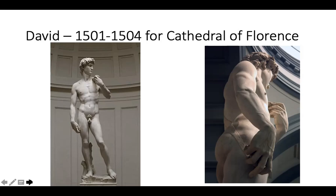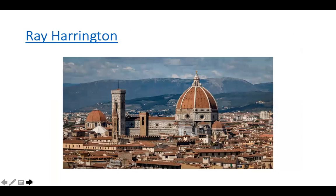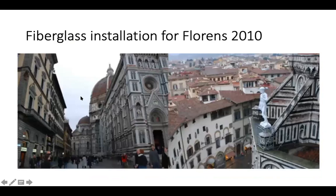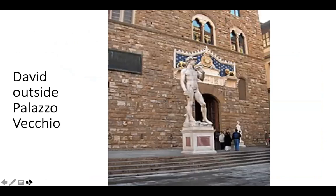They decide that instead of placing it on top of the Duomo — up on the buttress — they will place it at the Palazzo Vecchio, the seat of government. In 2010, there was a festival where they made a fiberglass replica, flew it around by crane, and put it in various places to demonstrate where it was supposed to have been. You can see he wouldn't have been very easily visible up that high.